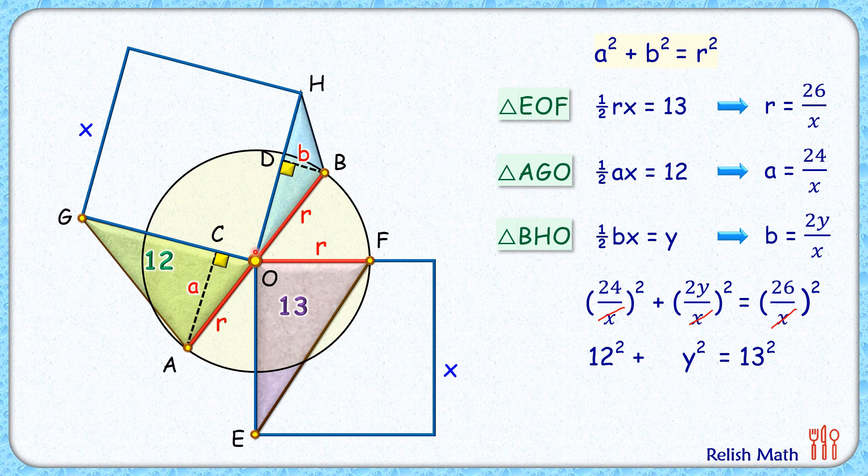And y is what is area of this blue triangle which we had to find. And this area of blue triangle is 5 cm square. And that's our answer. I hope you enjoyed the solution. I will see you in next video. Till then tata bye bye.